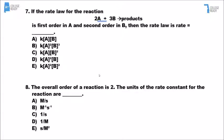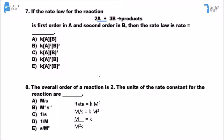For number 8, it says the overall order is 2. That means rate is equal to K times molarity squared. If we solve for K, plugging in molarity per second for rate, we get molarity over molarity squared times seconds, which simplifies to 1 over molarity·seconds, or M⁻¹s⁻¹. The answer is B.